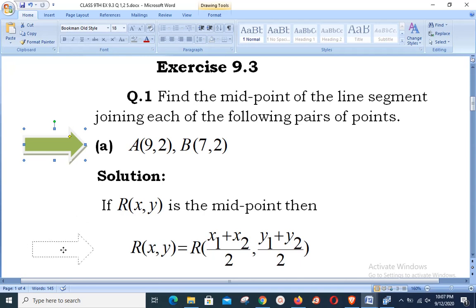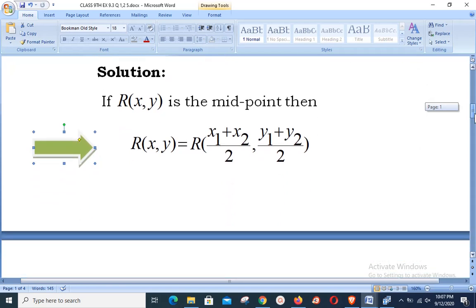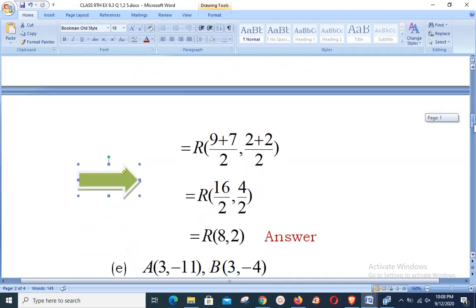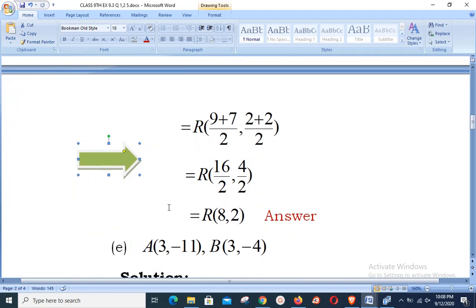Starting our solution: If R(x,y) is the midpoint, then by using the formula, R(x,y) = ((x₁+x₂)/2, (y₁+y₂)/2). Applying the formula, we have the sum of x-components: (9+7)/2, and the sum of y-components: (2+2)/2. We obtain in the next step 16/2, 4/2, making the simplification we have R(8,2) as the midpoint of the given two points.